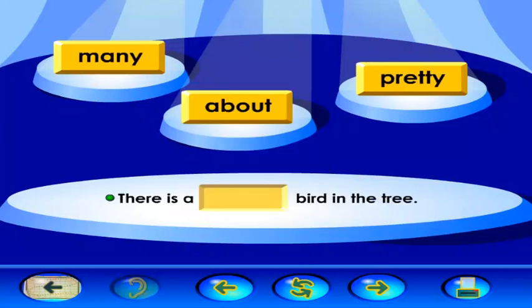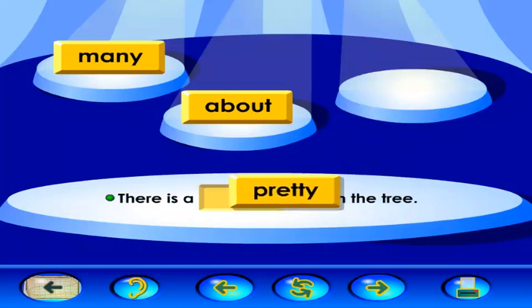Find the sight word that goes in this sentence. There is a bird in the tree. There is a pretty bird in the tree.